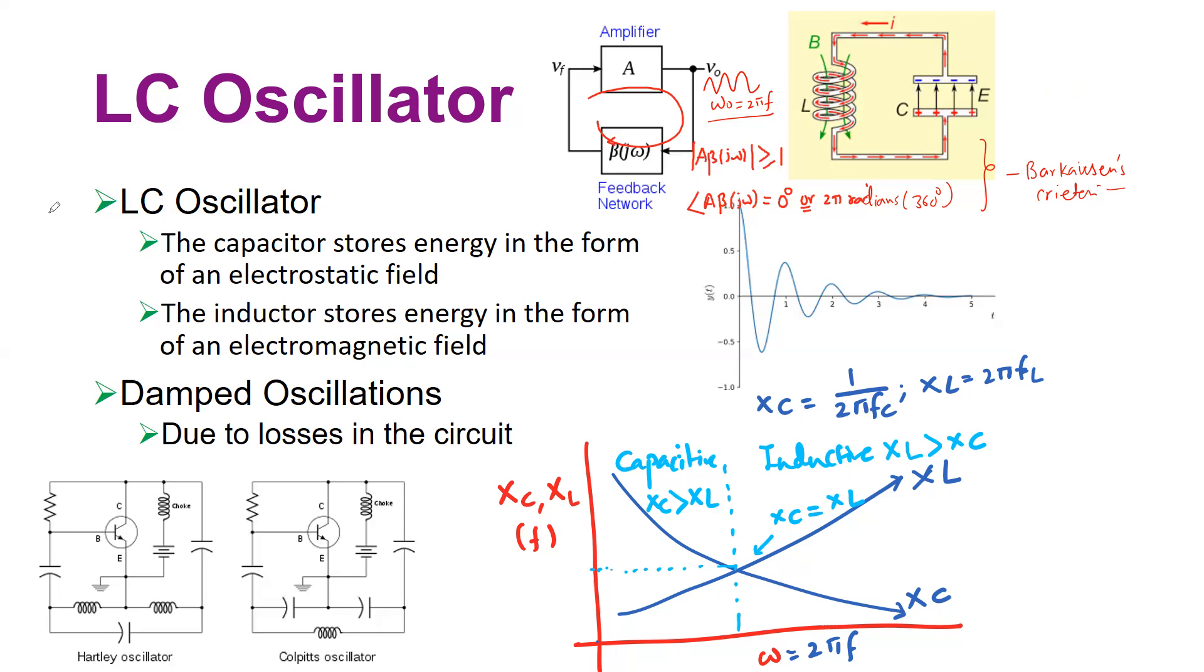Therefore, your oscillation will decay over a period of time. It will start building right here, and then over the time, they start dying. That is called damped oscillation. This is called damped oscillation for the practical LC circuit.